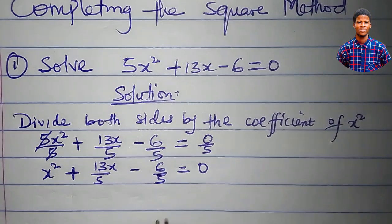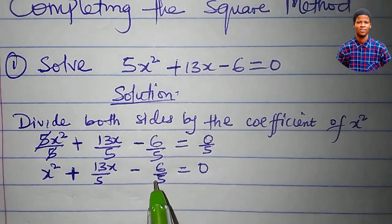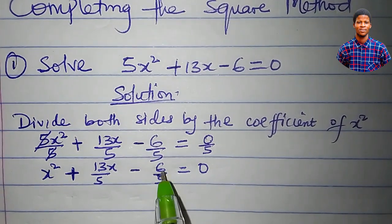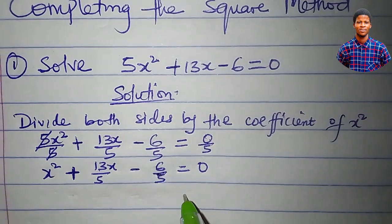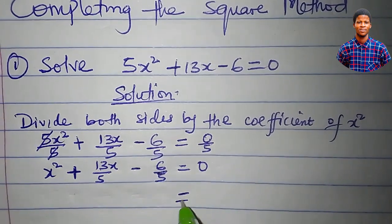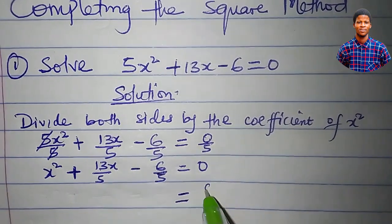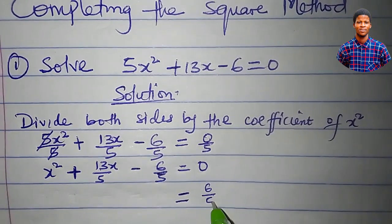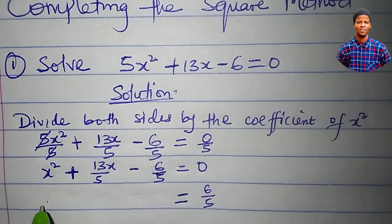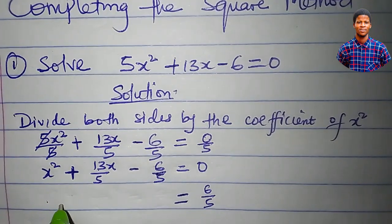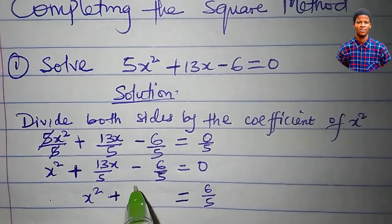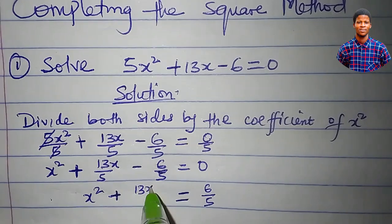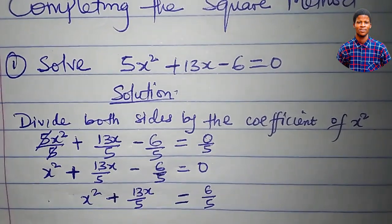What I will do now is to move this minus 6 over 5 away from the left and take it to the right. And obviously, if it crosses, it becomes 6 over 5. So at the left, we have x squared plus 13x all over 5.